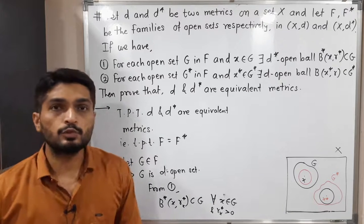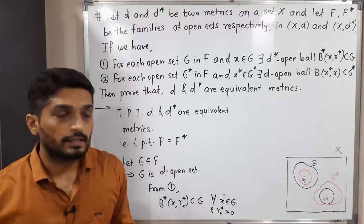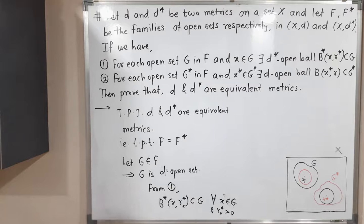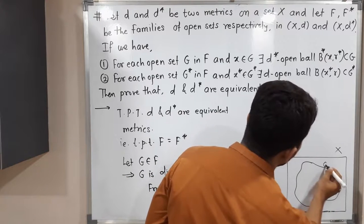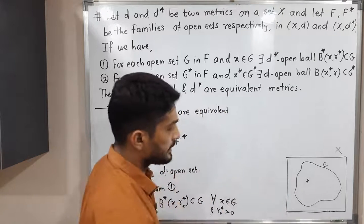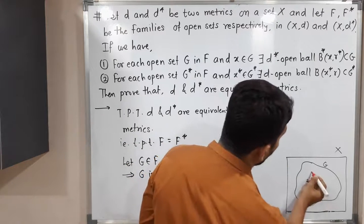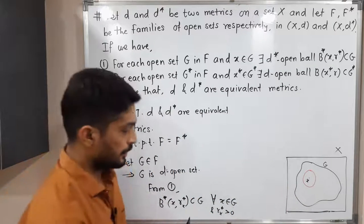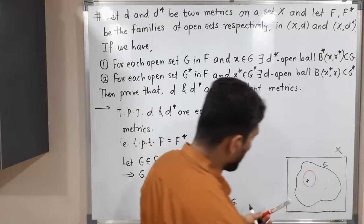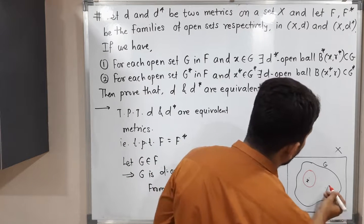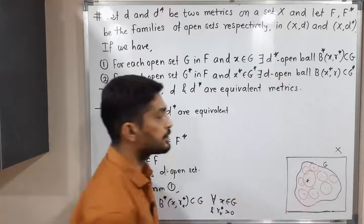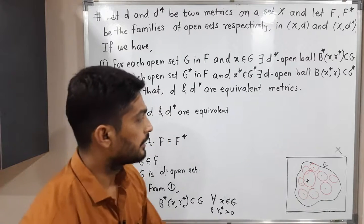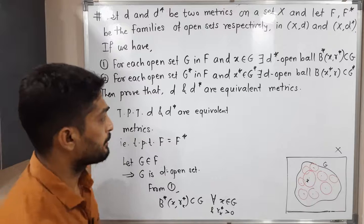This is true for every x belonging to G. In the diagram, suppose this is set G — if you select any point x, we can find a D*-open ball around x which is a subset of G. For any point, it is possible to find an open ball around that point which is a subset of G. Therefore G can be expressed as a union of all such open balls: G = ∪{ B*(x, R_x) : x ∈ G }.